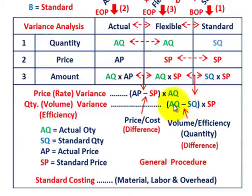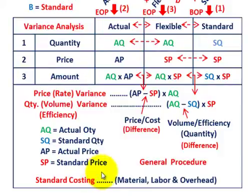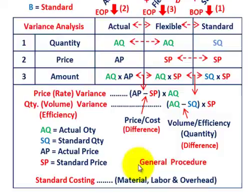For reference: AQ in green is actual quantity; SQ in blue is standard quantity; AP is actual price; SP in red is standard price. This is standard costing — what we're talking about here is our material, our labor, and our overhead. This is just the general procedure.